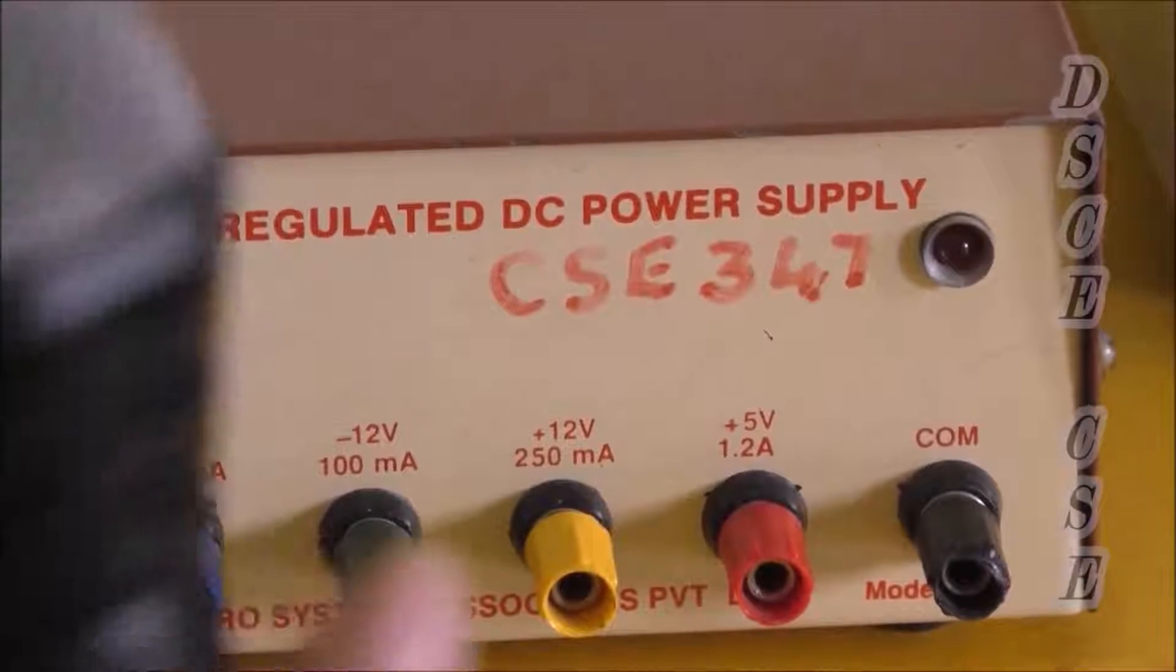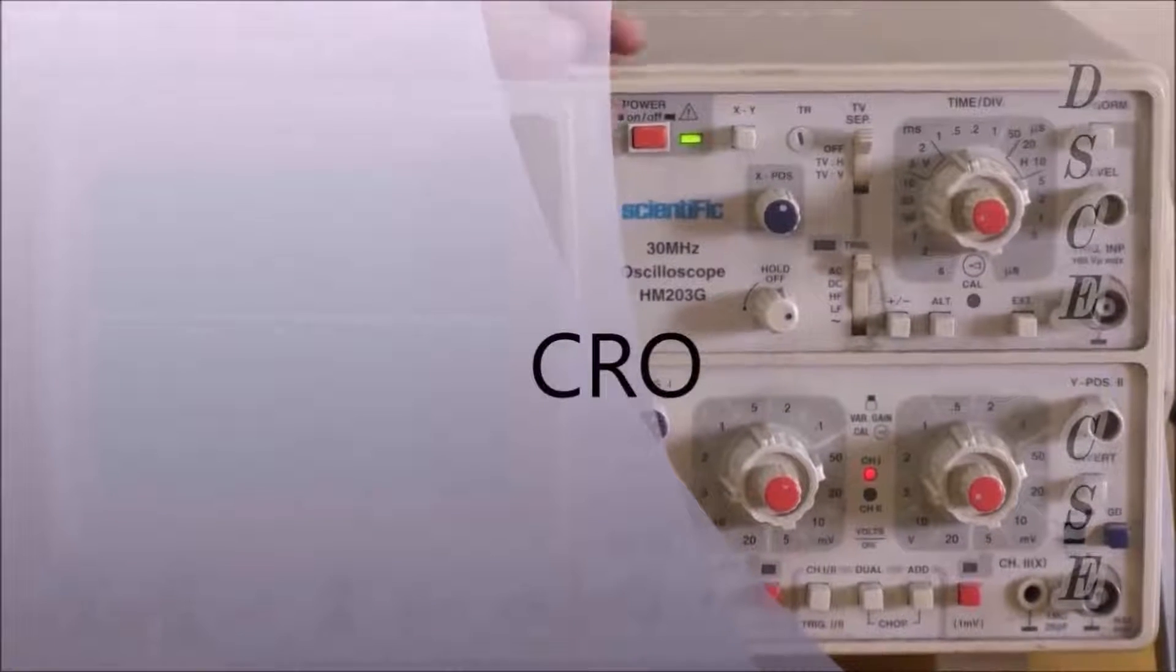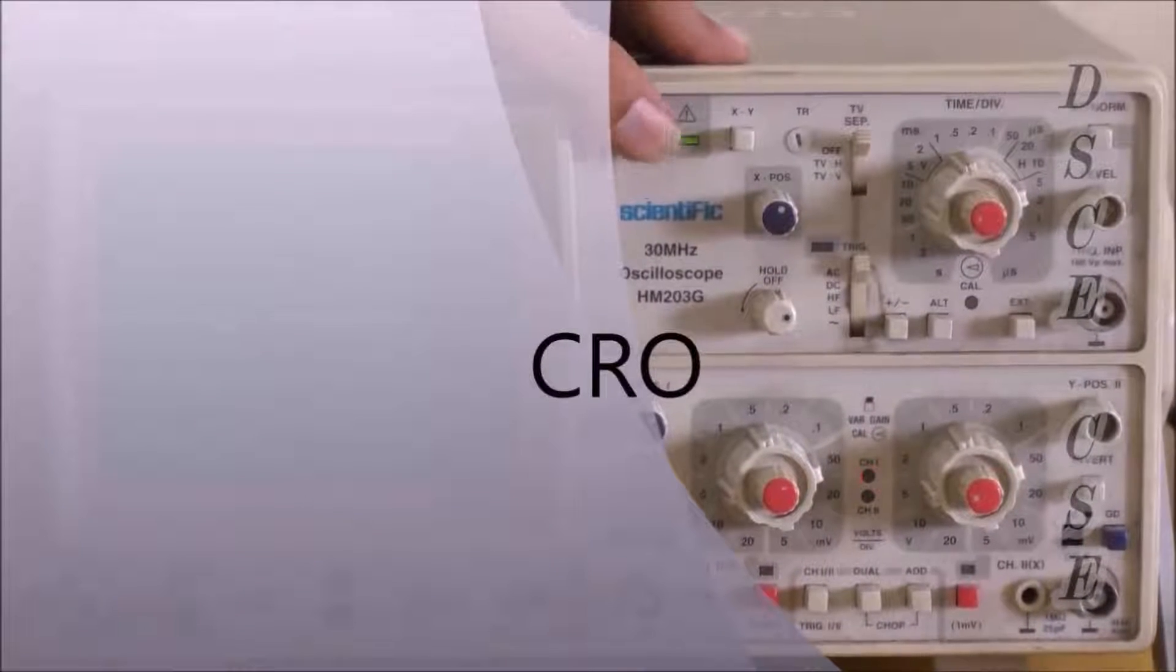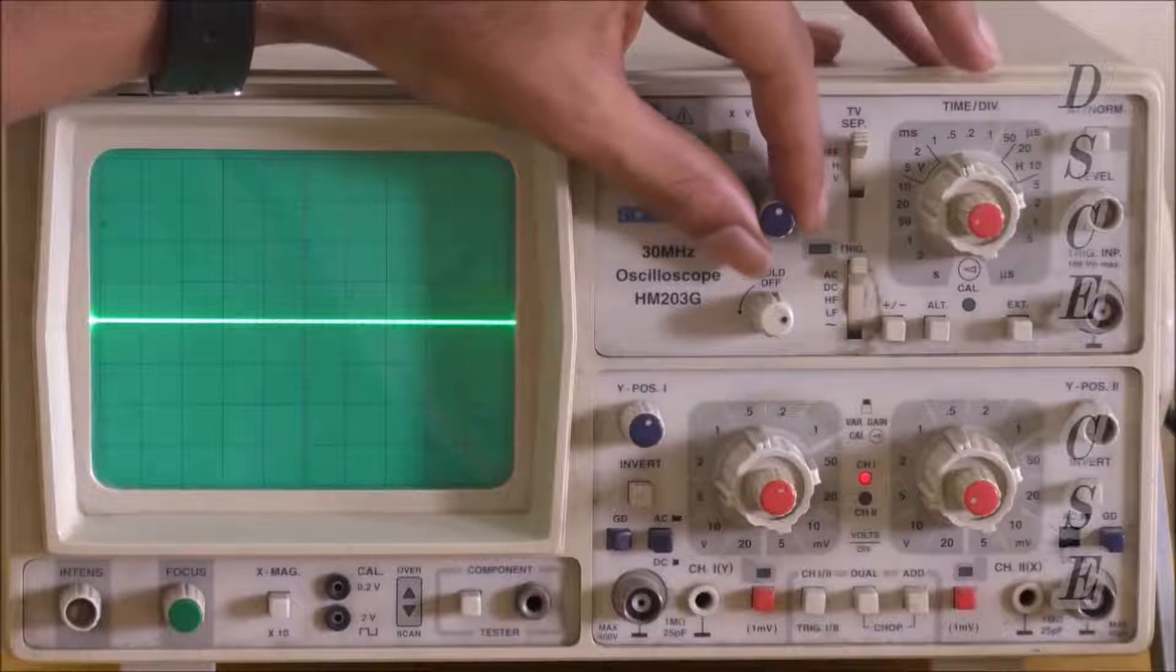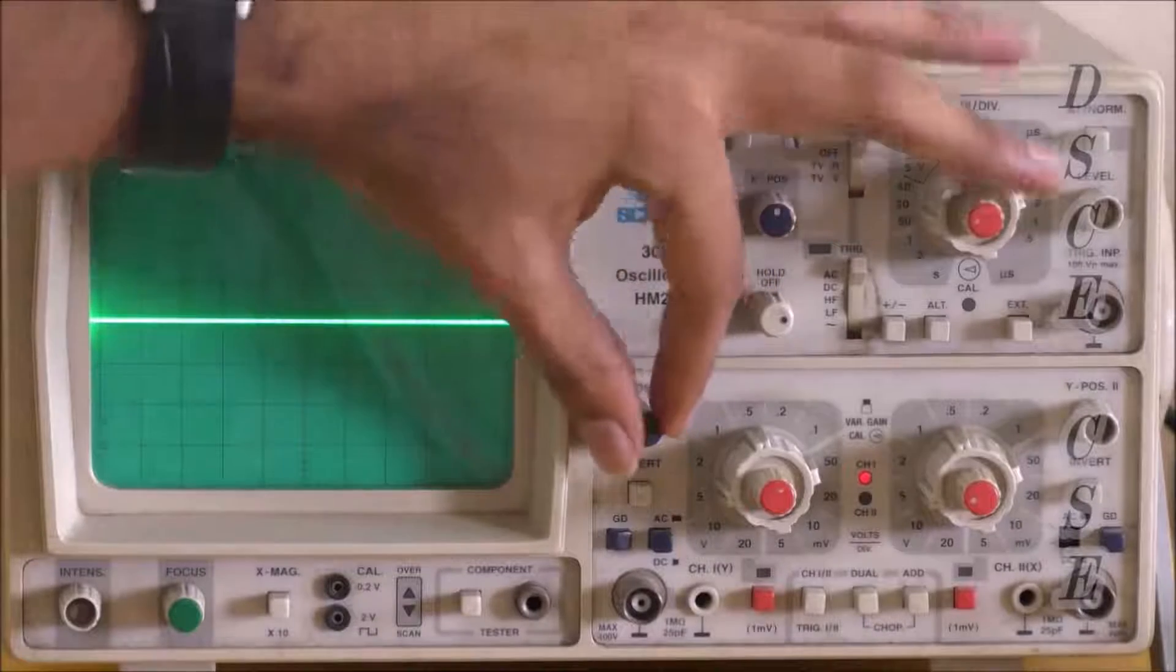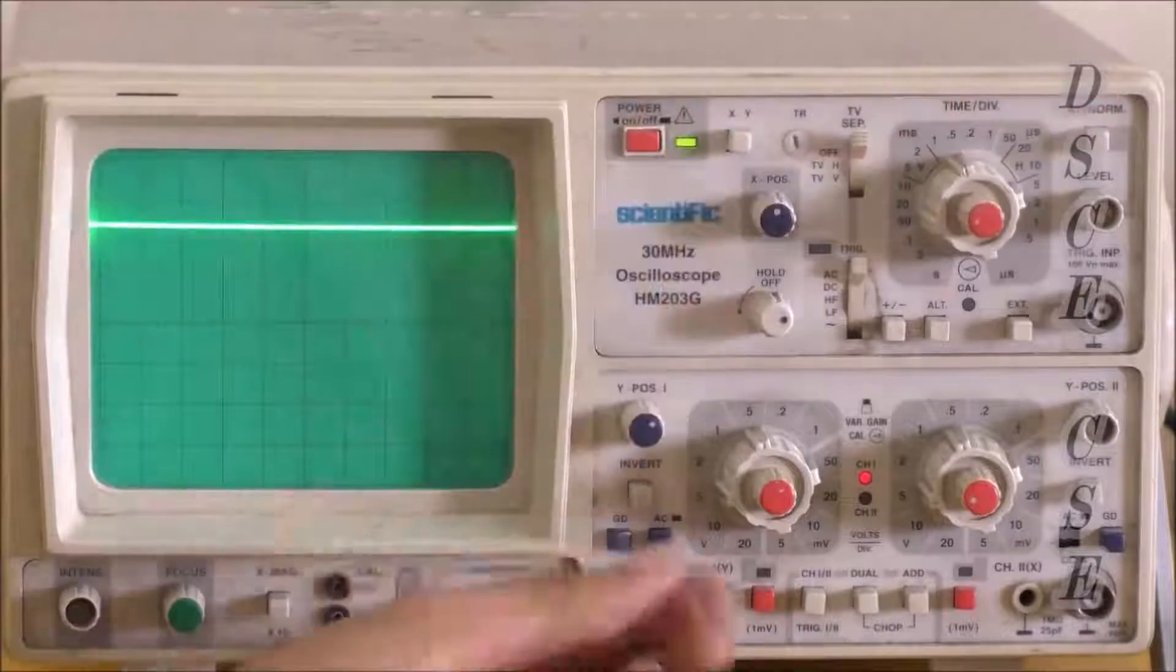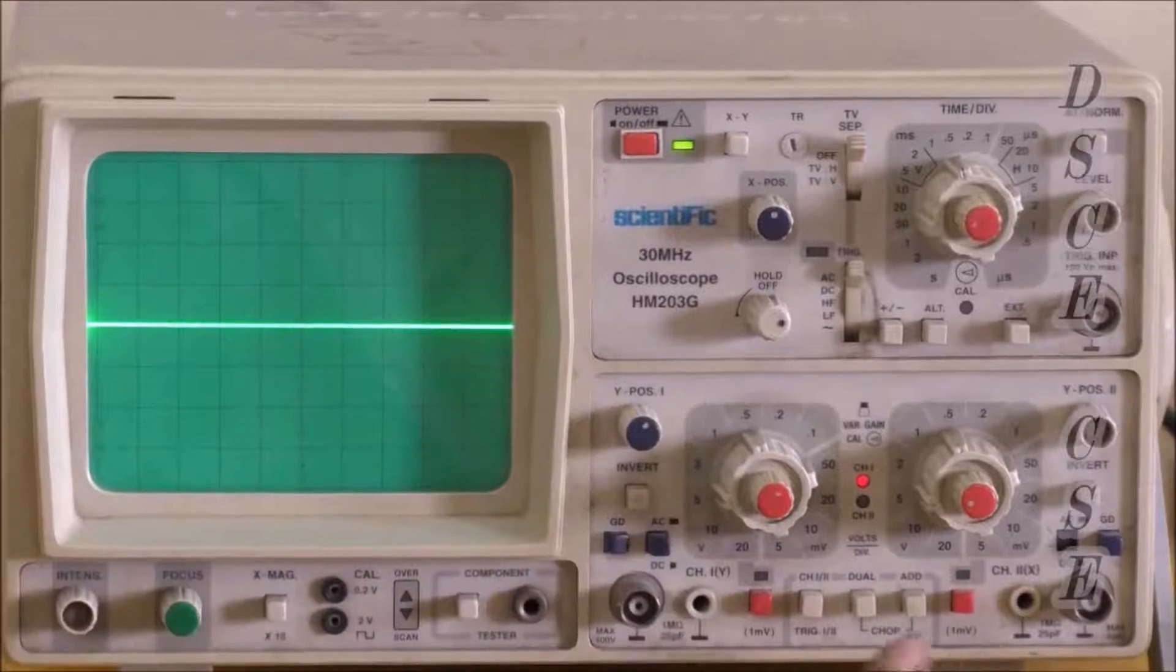This is the CRO and this is the button which is used to switch it on and off. This is the knob which is used to shift the X axis and this is the knob which is used to shift the Y axis.